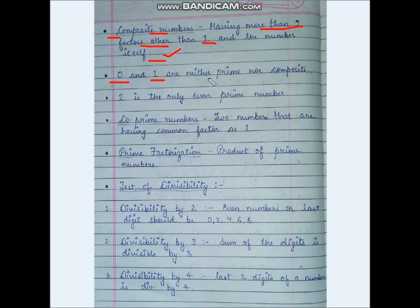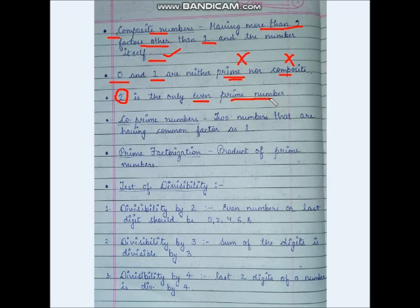0 and 1 are neither prime nor composite. We call neither 0 nor 1 a prime number, nor a composite number. And 2 is the only even prime number. All other prime numbers are odd.